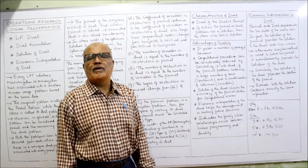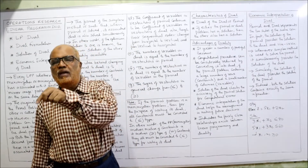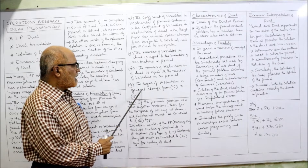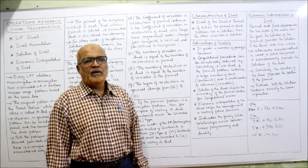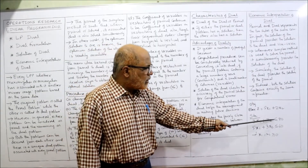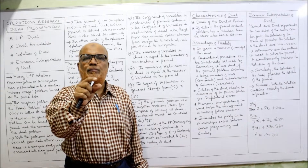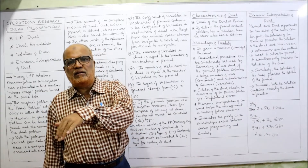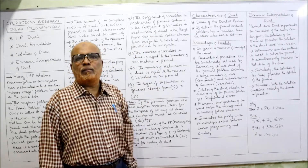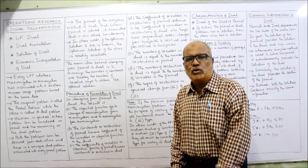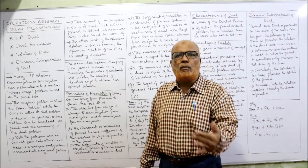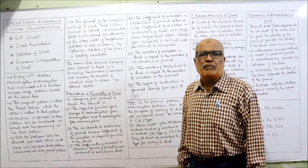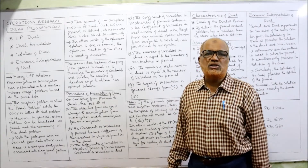The number of constraints in the primal becomes the number of variables in the dual, and the number of variables in the primal becomes the number of restrictions in the dual — completely opposite. Lastly, the signs of restrictions in general change from less-than to greater-than. In the primal problem the inequalities are less-than-or-equal-to type; these will get converted into greater-than-or-equal-to type in the dual problem, and vice versa.